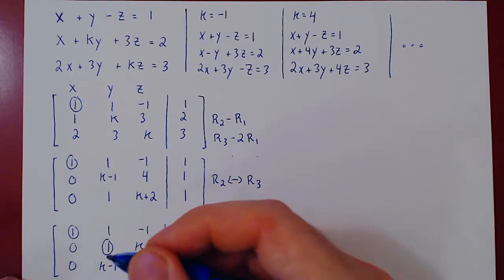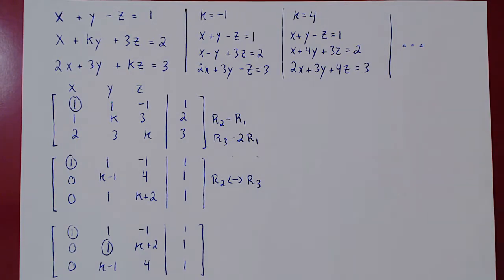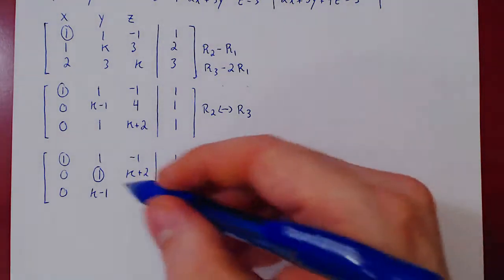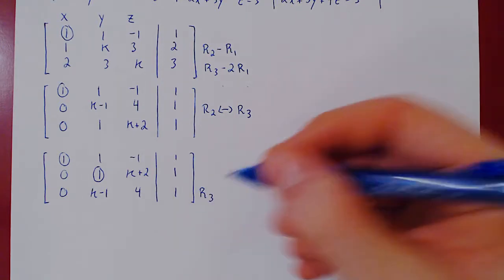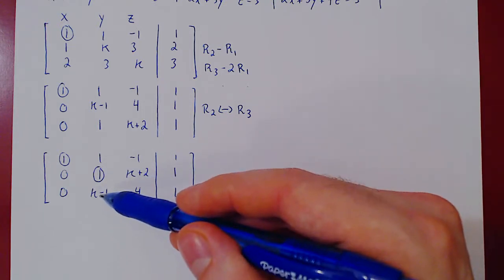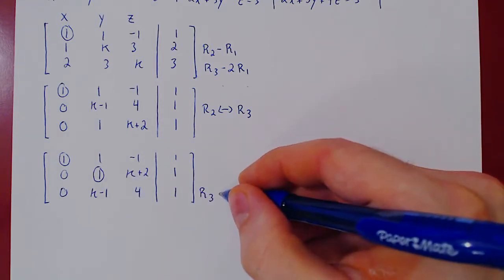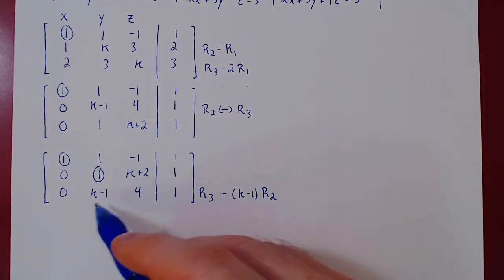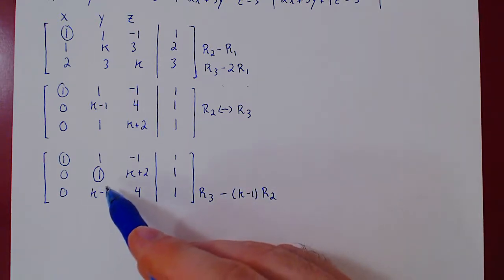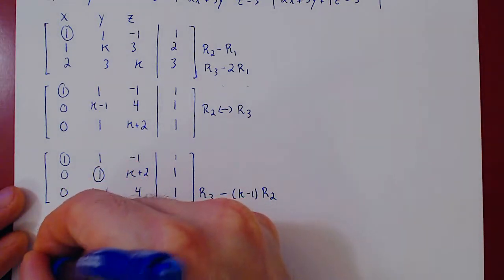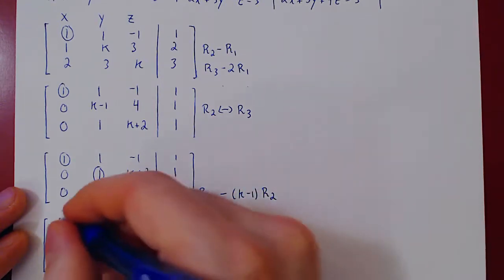So we have our second leading one. So, so far, we know that for any value of k, x is always leading, y will always be leading. Well, let's continue our reduction. We have our second leading one. Let's kill the entry below it. Well, to kill k minus one, we must do row three. Now think of it. If this value was four, we would do minus four row two. If this value was seven, we would do minus seven row two. So we simply do minus k minus one row two. Because k minus one minus k minus one times one is k minus one minus itself, which will end up being zero. Let's apply this row operation. As always, first, let's recopy row one and row two as we're not changing them.